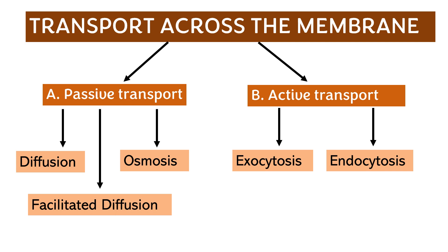The other kind of transport across the membrane is active transport. It has two types: exocytosis — meaning exit, going outside — and endocytosis, which goes into the inside.